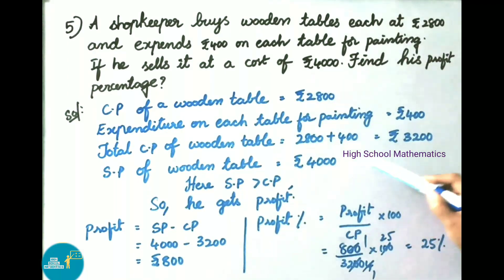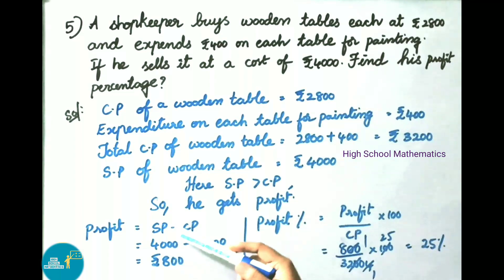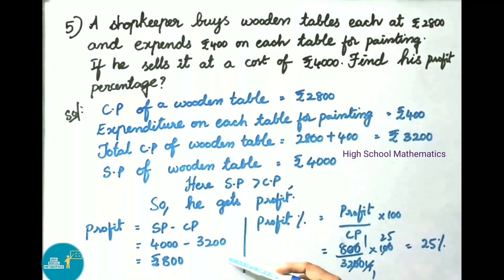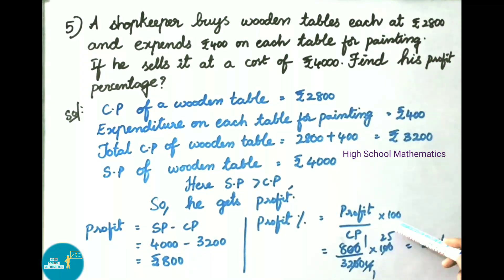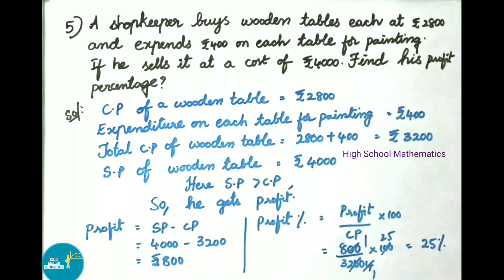Since selling price is greater than cost price, he gets profit. Profit equals selling price minus cost price, that is 4,000 minus 3,200, which gives 800 rupees. Profit percentage equals profit by cost price into 100, that is 800 by 3,200 into 100. Simplifying gives 25 percent. Therefore on selling each table, the shopkeeper gets 25 percent profit.